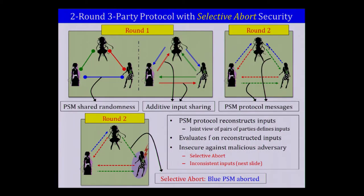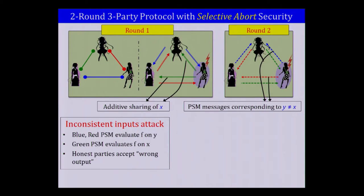The more serious attack is the inconsistent inputs attack. In the first round, a malicious party can do an additive sharing of input X, but in the second round send PSM messages corresponding to a different input Y. The PSM messages delivered to the malicious party evaluate on X (what was shared), while the PSMs delivering output to the honest parties evaluate the function on Y. As a result, honest parties accept the wrong output — not simulatable in the ideal world.